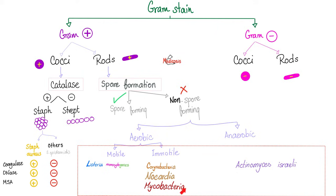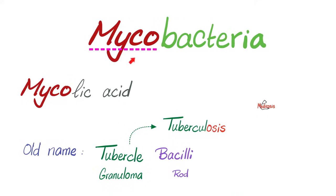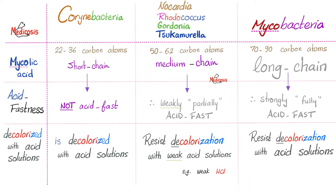Mycobacteria, including Mycobacterium leprae, is an immotile, aerobic, non-spore-forming, gram-positive rod. Does it stain well with gram stain? No. Why do we call them mycobacteria? Because they have mycolic acid in the cell wall — long-chain mycolic acid, meaning 70 to 90 carbons. And because they have long-chain mycolic acid, they are strongly acid-fast, i.e. acid-resistant, i.e. resistant to decolorization with acid solutions.